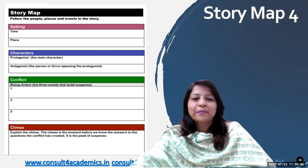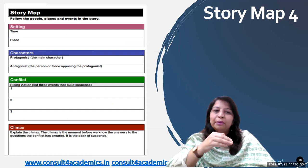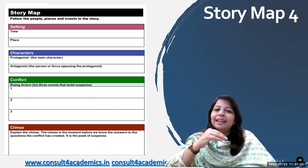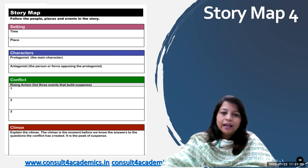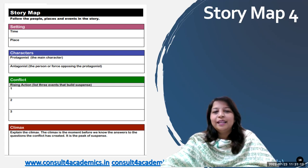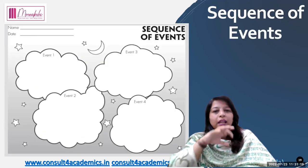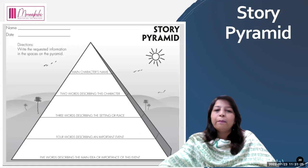Moving ahead, this is story map four — a journal layout where time, place, characters, protagonist, antagonist, conflict, rising action, and climax are explained. The climax is the moment before we know the answers to the questions the conflict has created — it is the peak of suspense. Students will be able to create this kind of story map. Moving ahead, sequence of events — they can list out different sequencing of the events of the story.